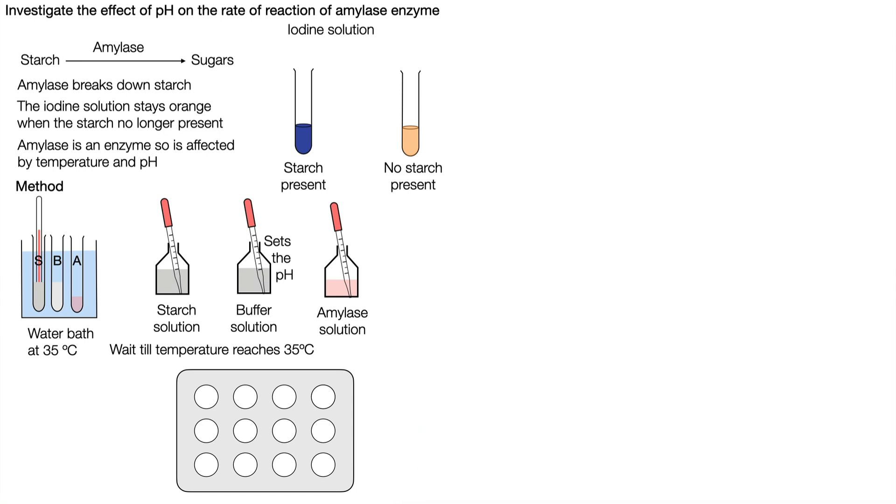So while we're waiting for the temperature to reach 35 degrees C we can add a drop of iodine into each of those wells. So one drop into each of those wells until all of them have been filled.